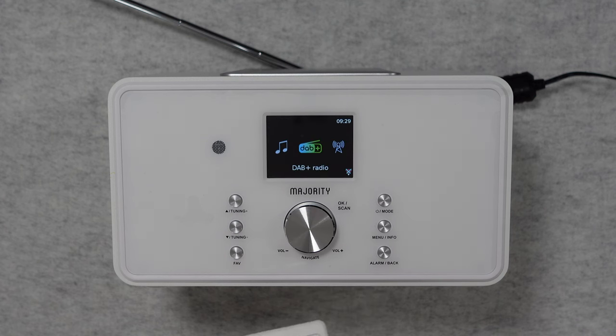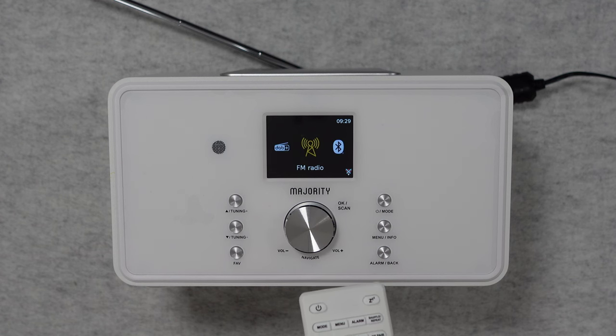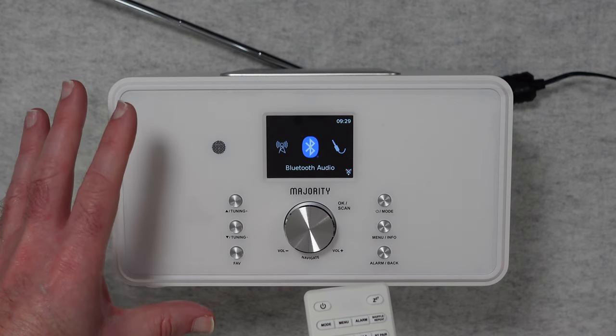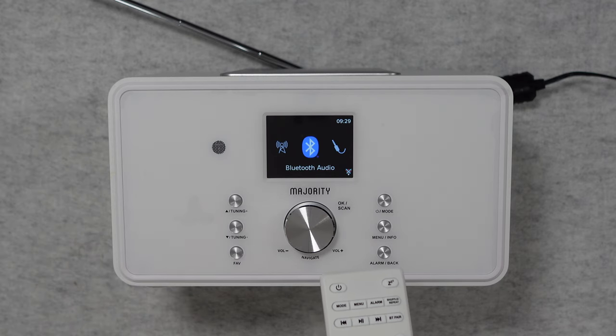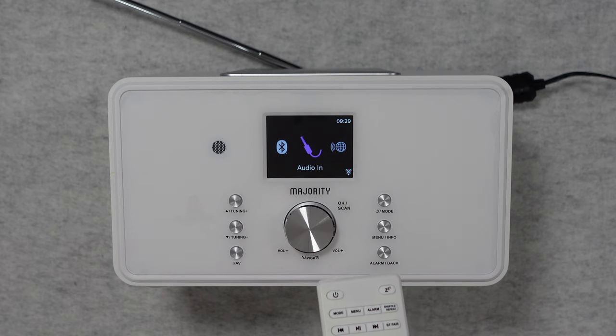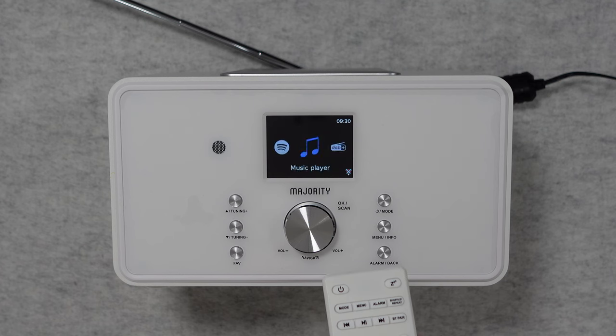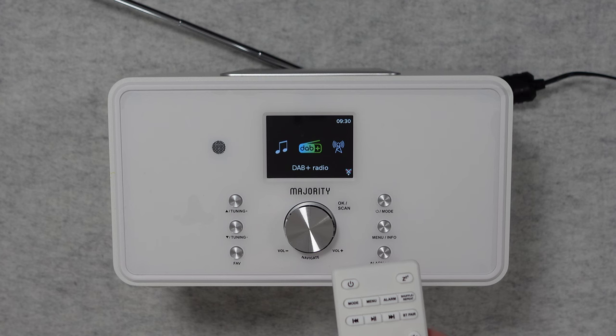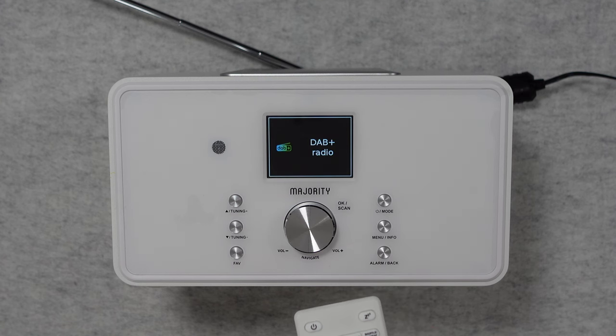I can also easily switch between modes. So here you can see I'm on DAB plus radio. I can go across to FM radio. Bluetooth audio. And actually connect my smartphone to this and use it like a Bluetooth speaker. We've got that audio input, the auxiliary input I showed you earlier. We've got internet radio, podcasts, Spotify, also music player. And then we're back round to the DAB plus radio connection that we're currently listening to.